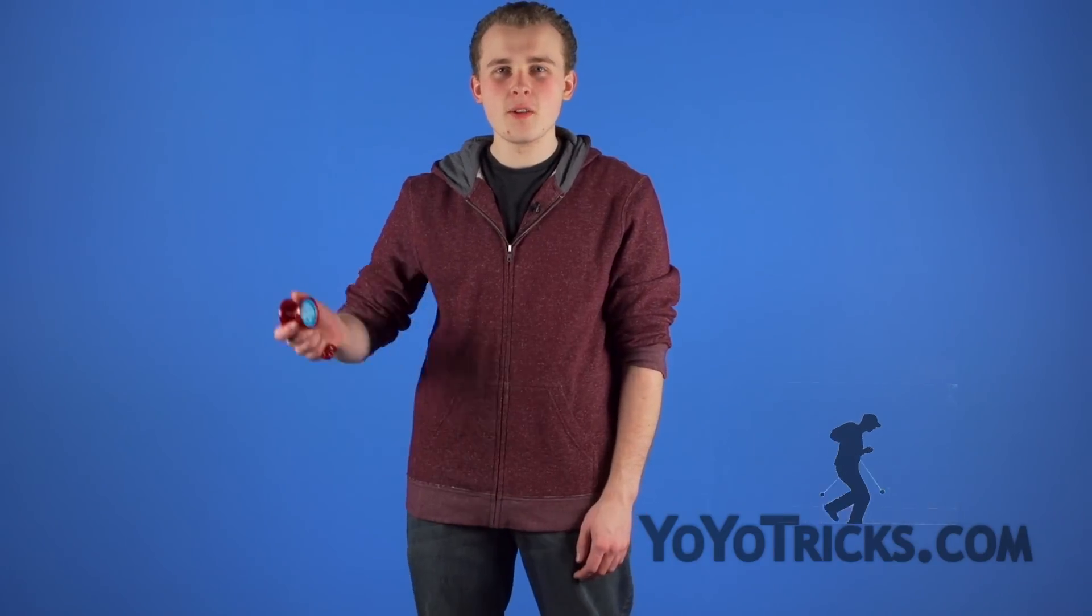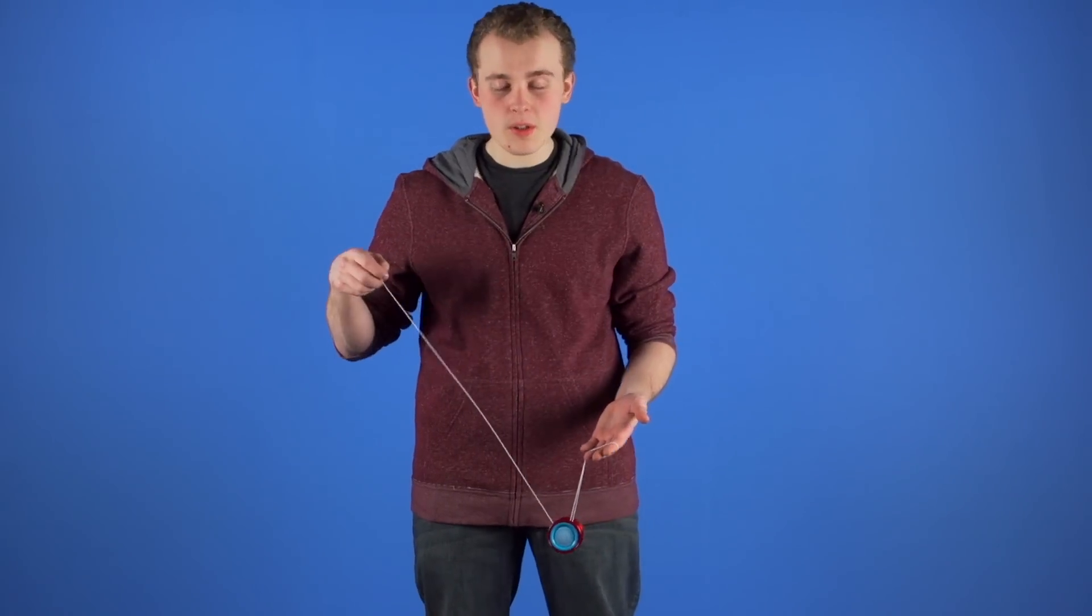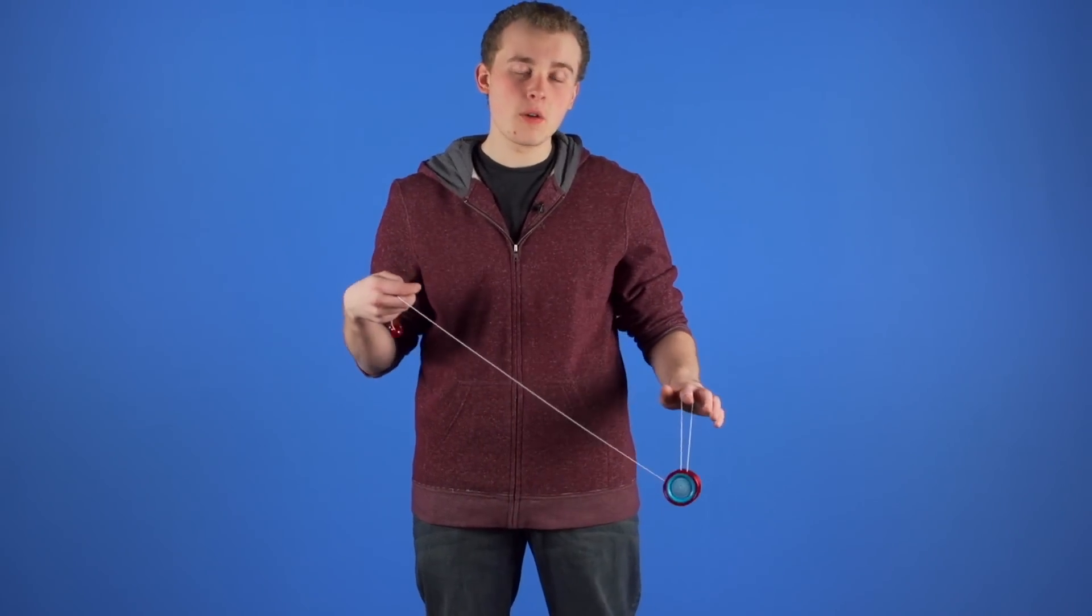This trick is called 360 and it looks like this. So 360 is what's known as a dependent 5A trick, which means that the motion of the yoyo is directly influencing the motion of the counterweight.